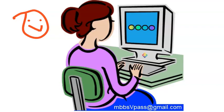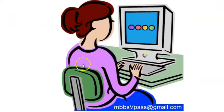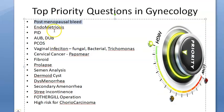High priority gynecology questions: bleeding, bleeding, bleeding - from menarche to menorrhagia to menopause. Postmenopausal bleed is a very high priority question in gynecology because it can indicate carcinoma - cervical carcinoma or endometrial carcinoma. Endometritis involves menstrual blood going retrograde up into the fallopian tubes instead of out.